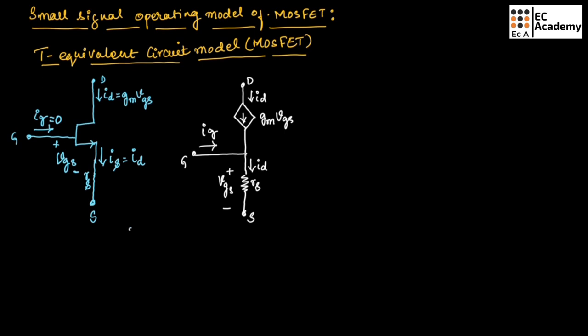Since RS equals VGS divided by ID, and ID equals GMVGS, we can write RS as VGS divided by GMVGS. If we cancel out VGS, we get RS equals 1 by GM. So in place of RS, we can write 1 by GM.